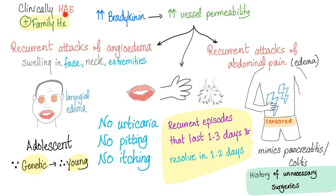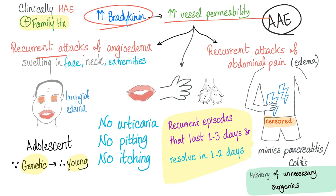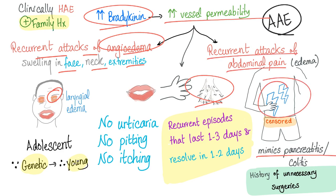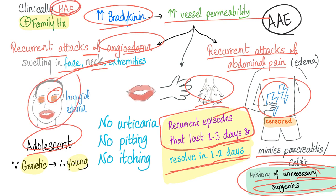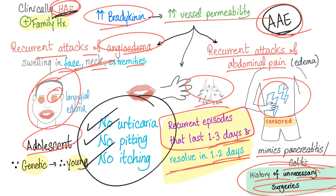The clinical picture of hereditary angioedema is the same as acquired angioedema — two birds, one stone. Lots of bradykinin leads to increased vessel permeability causing recurrent attacks of angioedema in the face, neck, extremities, eyelids, and genitalia. Recurrent attacks of abdominal pain can mimic pancreatitis and colitis; the patient may have a history of unnecessary surgeries. Episodes last one to three days and resolve in one to two days. In hereditary angioedema the patient is young; in acquired angioedema, the patient is older. No urticaria, no pitting, no itching — distinguishing it from allergic angioedema.